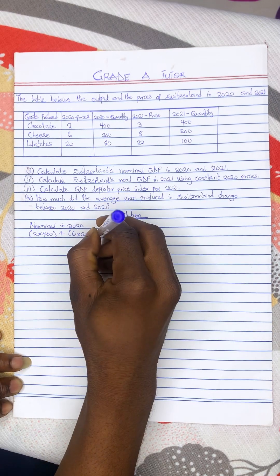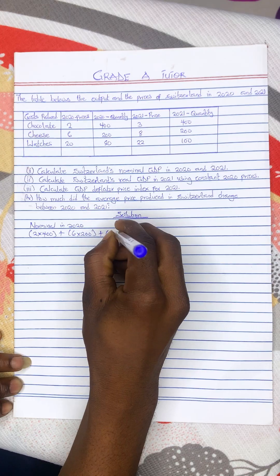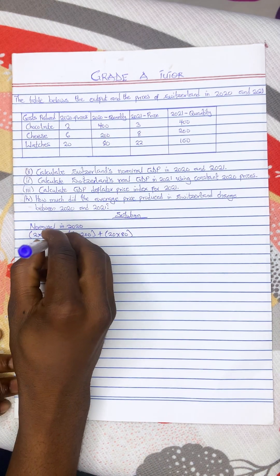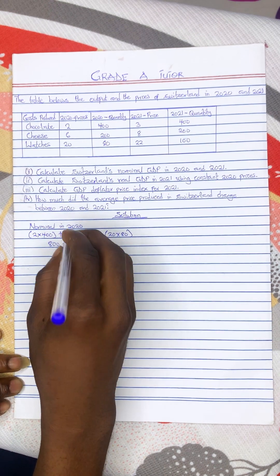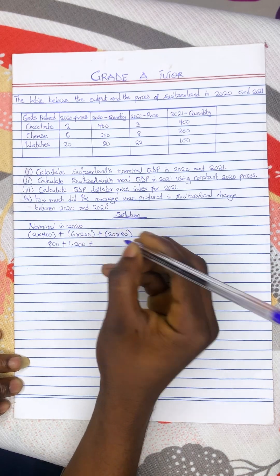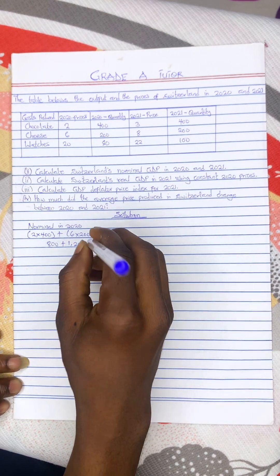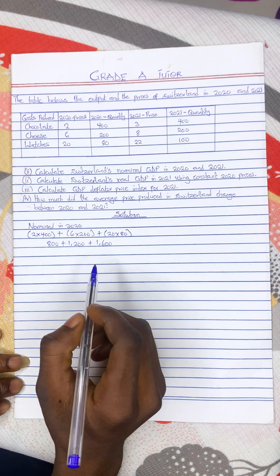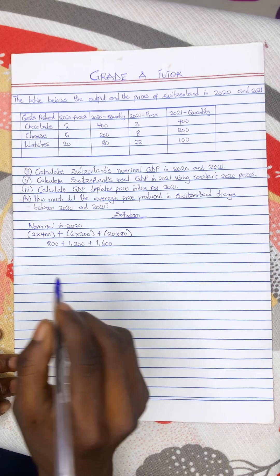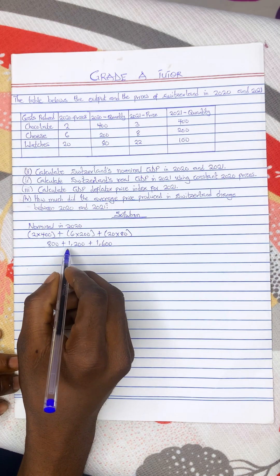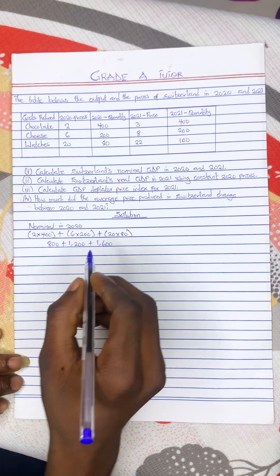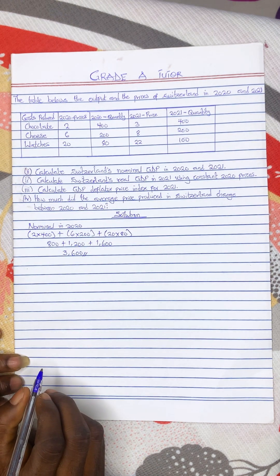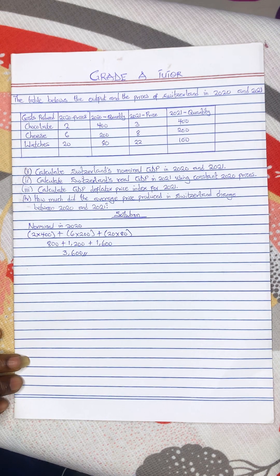Plus 20 times 80. So 20 times 80 gives you 1,600. These are the market values. When you add the market values: 800 plus 1,200 gives you 2,000, plus 1,600 gives you 3,600. So the nominal GDP in 2020 is $3,600.